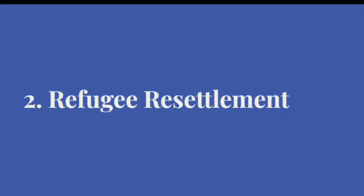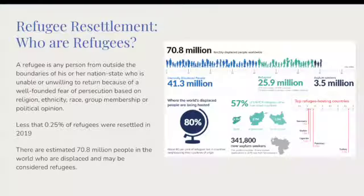To begin, we'll go over some key vocabulary. Who is a refugee? According to the UNHCR, or the UN High Commissioner on Refugees, a refugee is any person outside the boundaries of their nation state who is unable or unwilling to return to their country of origin owing to a well-founded fear of being persecuted for reasons of race, religion, nationality, membership of a particular social group, or political opinion.